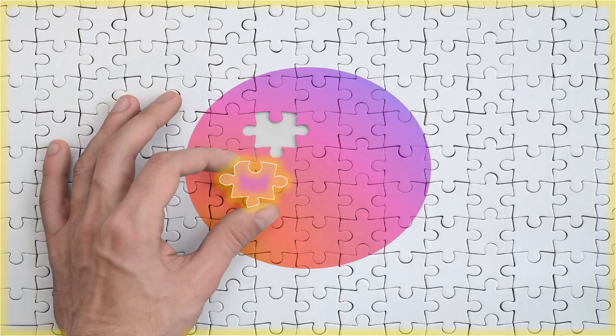Think of the difference between a puzzle piece and a completed puzzle. The individual puzzle piece would be a landform, whereas the completed puzzle would be your landscape.